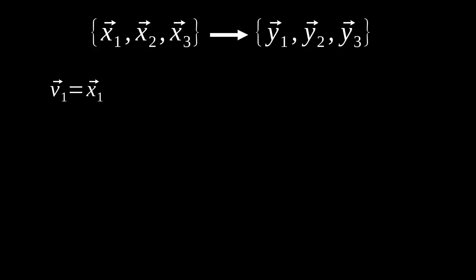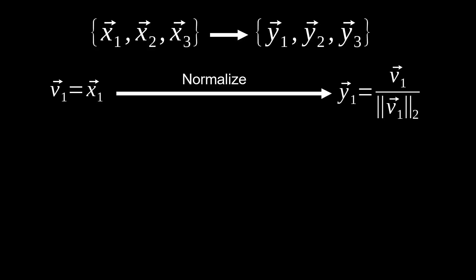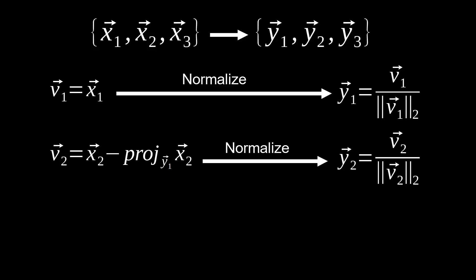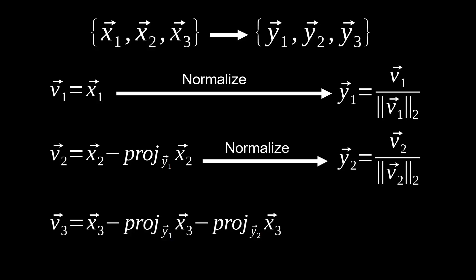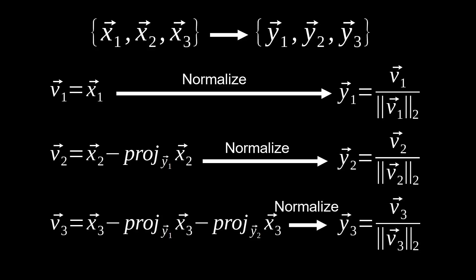We're going to follow this general procedure. First, we set vector V1 equal to X1 — just the first vector of our set. Then we normalize it to get Y1: take V1 and divide by its two-norm. For the second vector, V2 equals X2 minus the projection of X2 onto Y1. We normalize that to get Y2. V3 is X3 minus the projection of X3 onto V1, minus the projection of X3 onto V2, and hopefully you can see the pattern. We normalize to get Y3.